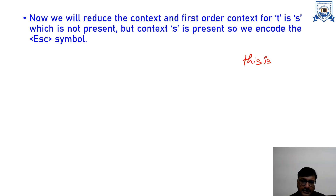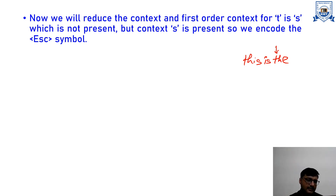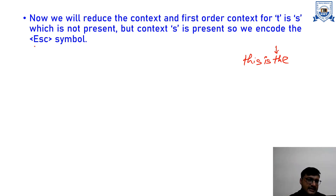Now we reduce the context to 1. For symbol T, the first order context is S. We look in the first order count array to see if we have an entry for T with context S. We are not having this entry, so we need to encode the escape symbol again and reduce the context. We repeat the same procedure: we use the L, U, cumulative count, and total count from the first order count array, update L and U, and compare MSBs.